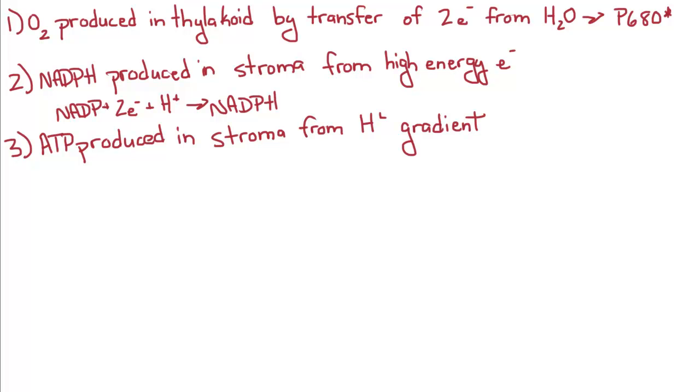And then ATP is produced in the stroma from the hydrogen ion gradient.